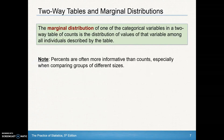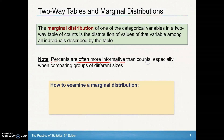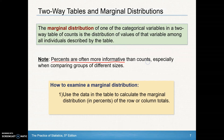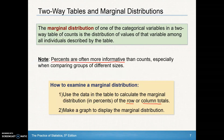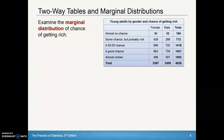Percents are often more informative than counts, especially when comparing groups of different sizes, because the percentages give you a more comparative reflection on the categories. To examine a marginal distribution: first, use the data in the table to calculate the marginal distribution of percents of the row or column totals; then make a graph to display the marginal distribution.